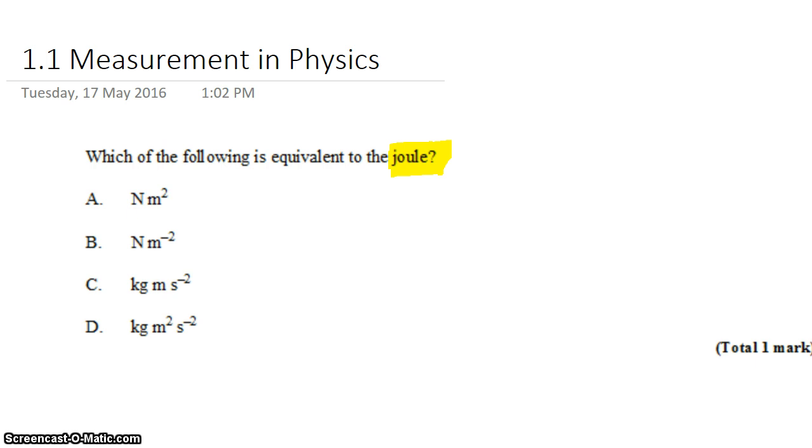To do dimensional analysis, you need to know some sort of equation that relates the Joule to other things. So you may know, for example, that kinetic energy can be calculated by the formula one-half times the mass of an object times its velocity squared. You may know this, you may not at this point in the course, but I'm sure you're going to know it very well very soon.